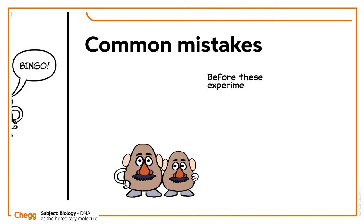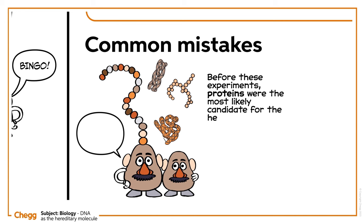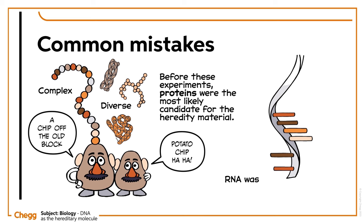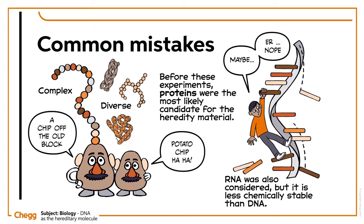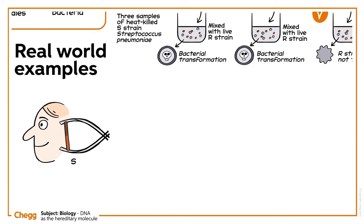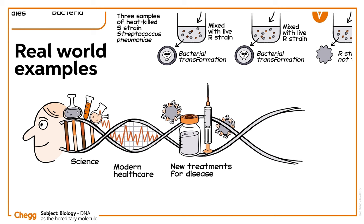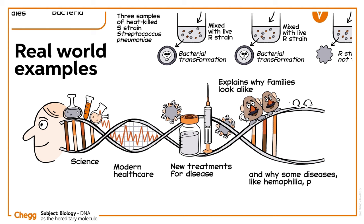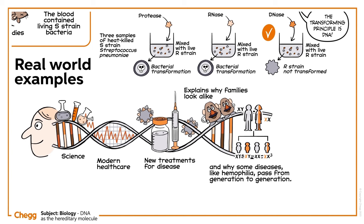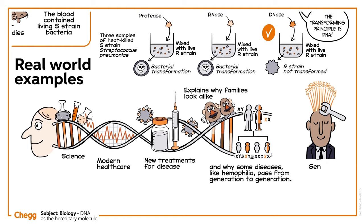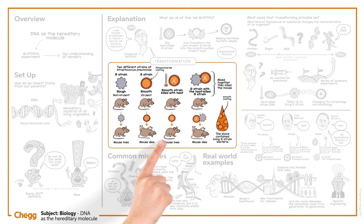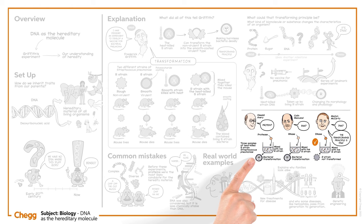Before these experiments, the scientific consensus was that proteins were the most likely candidate for the hereditary material, since they were diverse and complex. RNA was also considered, but it is less chemically stable than DNA. Discovering that it was in fact DNA accelerated our understanding of science and modern healthcare and paved the way for new treatments for disease. It explains why families look alike and why some diseases, like haemophilia, pass from generation to generation. And today, Griffith's process of bacterial transformation is still used routinely in labs for genetic engineering. We have learned about how Griffith discovered the transformation principle, a key step in the discovery of DNA's hereditary nature.